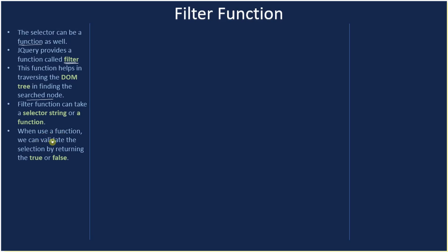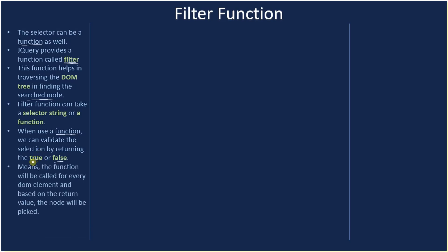When we use a function, we can validate the selection by returning true or false. You can pass a customized function, and when that function returns true the element will be picked in the DOM tree. The function will be called for every DOM element, and based on the return value — true or false — the node will be picked.